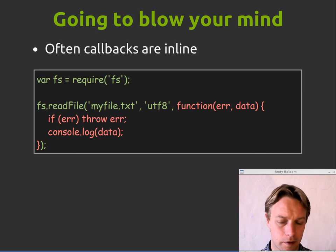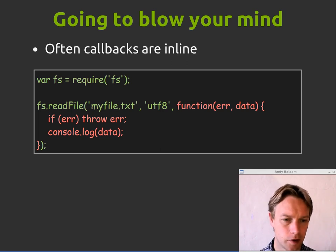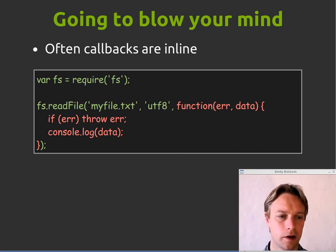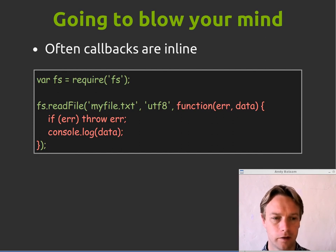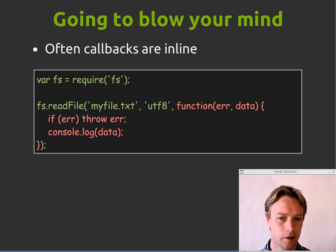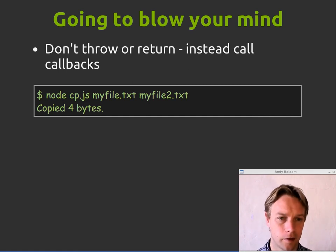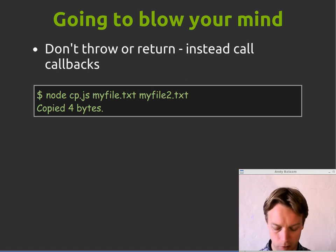That was how you'd do it if you had a separate function called doSomething, but often in Node code the callback is actually defined inline. This is exactly the same code — we call readFile and provide a callback function, but that callback function is right there in the call to readFile. The pattern for working with this is: don't throw an exception if something went wrong, don't return your answer — instead call a callback, providing either what went wrong or what went right.